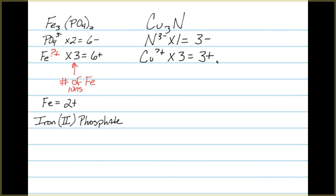Our copper, again, we don't know. We're trying to figure that out. We have three of them. We know that it must balance out the 3 plus. And that means that with three coppers, to have a 3 plus charge, each copper must have a plus 1 oxidation state.